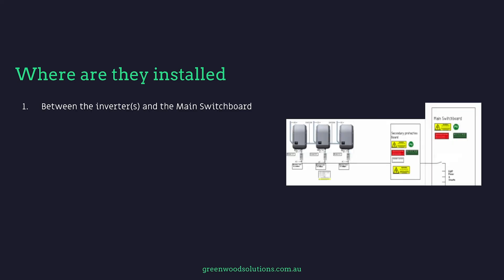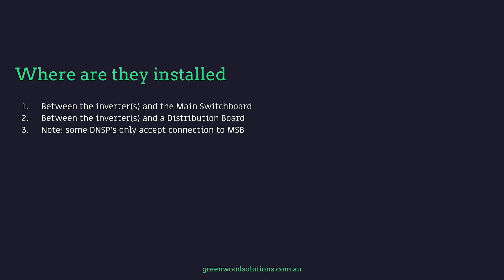Where are the secondary protection boards actually installed? Between the inverters and the main switch board in most cases, or between the inverters and a distribution board. Note that some DNSPs only accept a connection to the MSB. In most cases, secondary protection boards are installed fairly close to the MSB, and in fact some DNSPs stipulate it must always be connected to the main switch board. Others allow connection to a distribution board or secondary switch board.